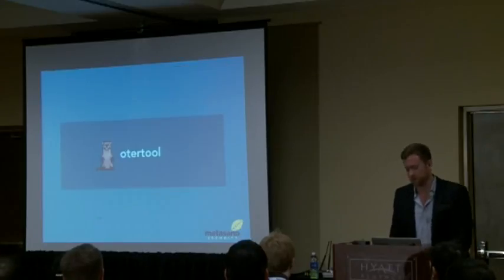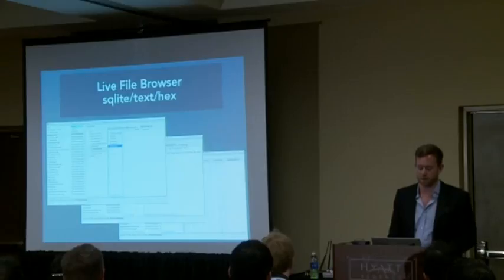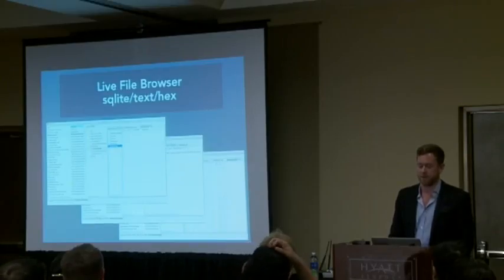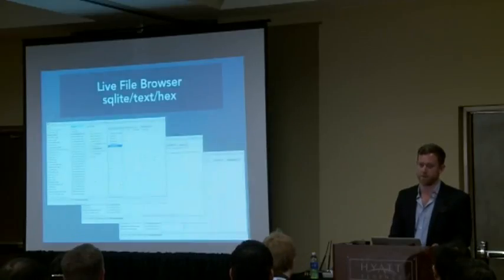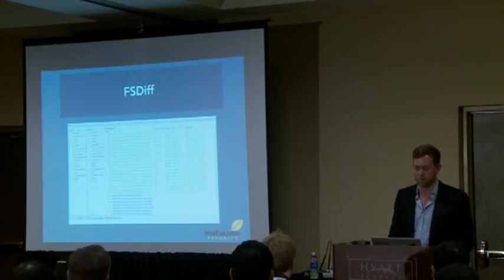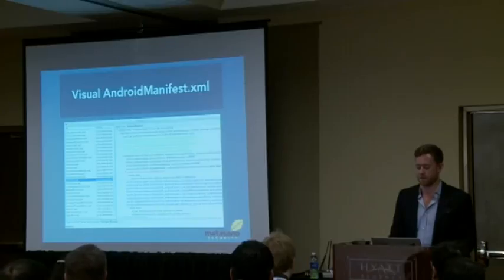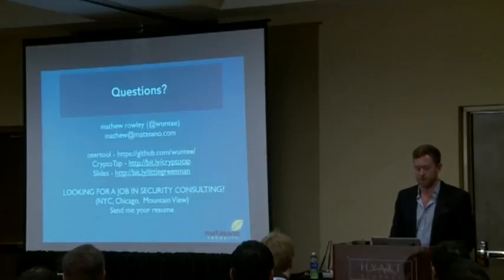Otter Tool is what started this whole talk. It has a live file browser allowing you to view SQLite databases, text files, and hex files directly from the device. There's a filesystem differ that scans the filesystem at two points in time to see what files have changed on the device. There's also an ability to visualize the Android manifest file, highlighting key areas from a security perspective.